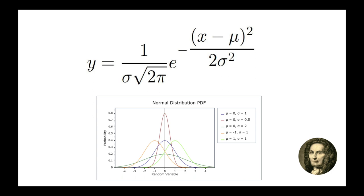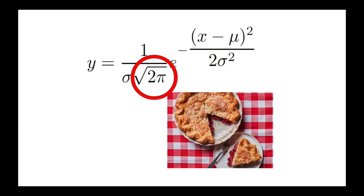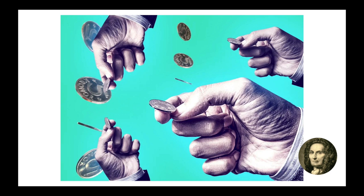Have you ever wondered why there is pi in the normal distribution formula? One day de Moivre sat down and started flipping a bunch of coins, counting them over and over again. This led him to stumble on the central limit theorem, which is probably the most important theorem in all of science and mathematics.